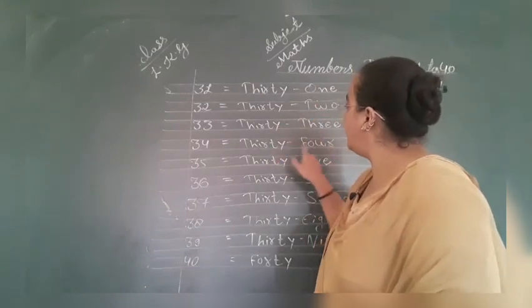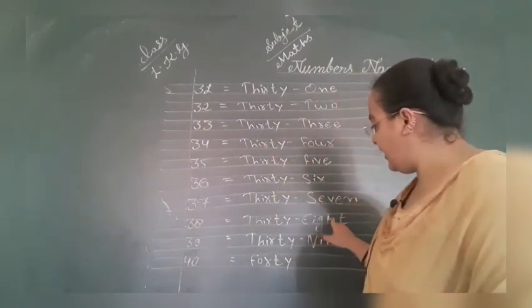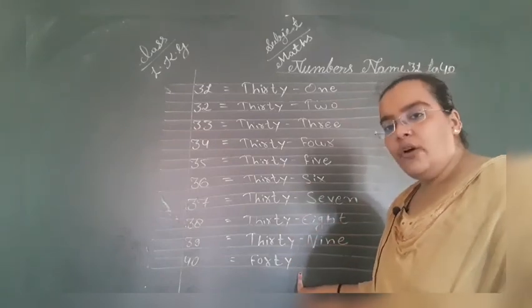These are the numbers name: 31, 32, 33, 34, 35, 36, 37, 38, 39, 40.